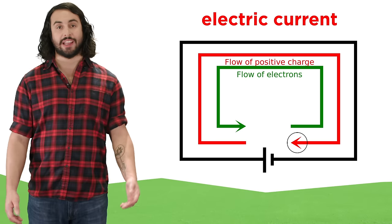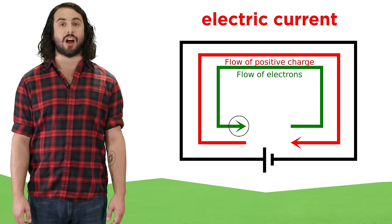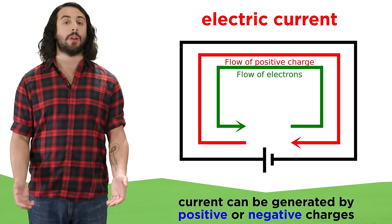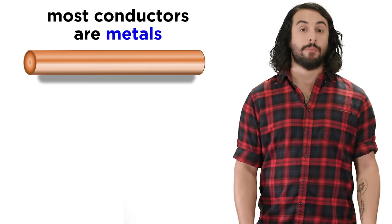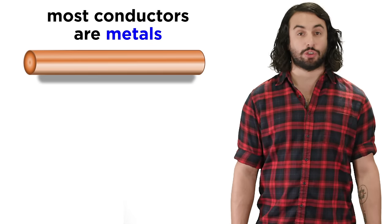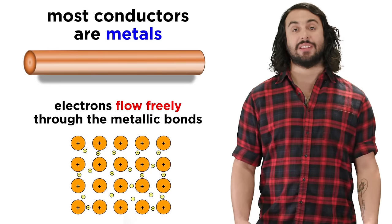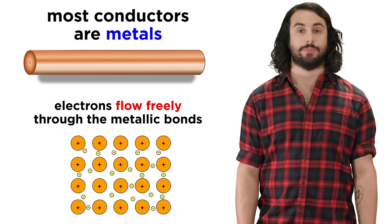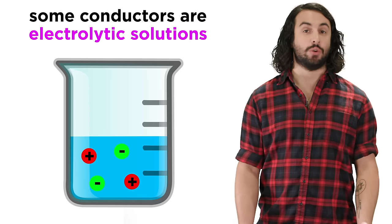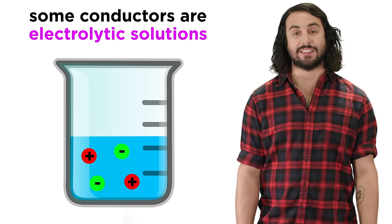The direction of the current is always opposite the movement of negative charges, but a current can be generated by particles of either charge. Most materials that are conductors of electricity are metals that allow for the free movement of electrons from atom to atom, or electrolytic solutions with charged ions in solution.